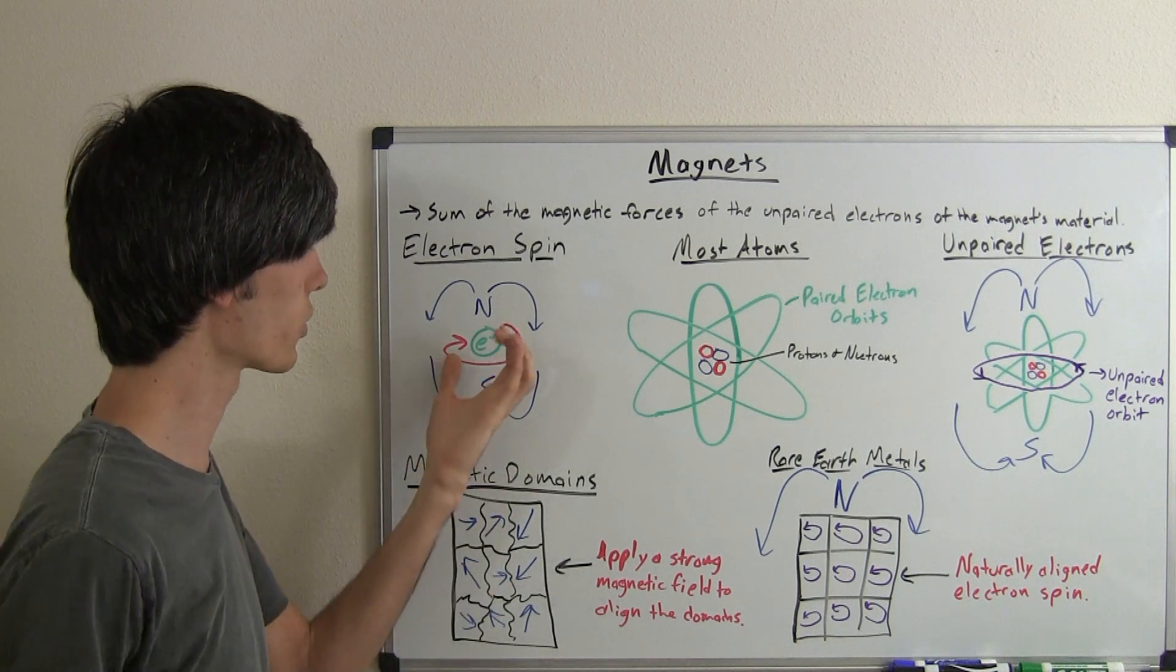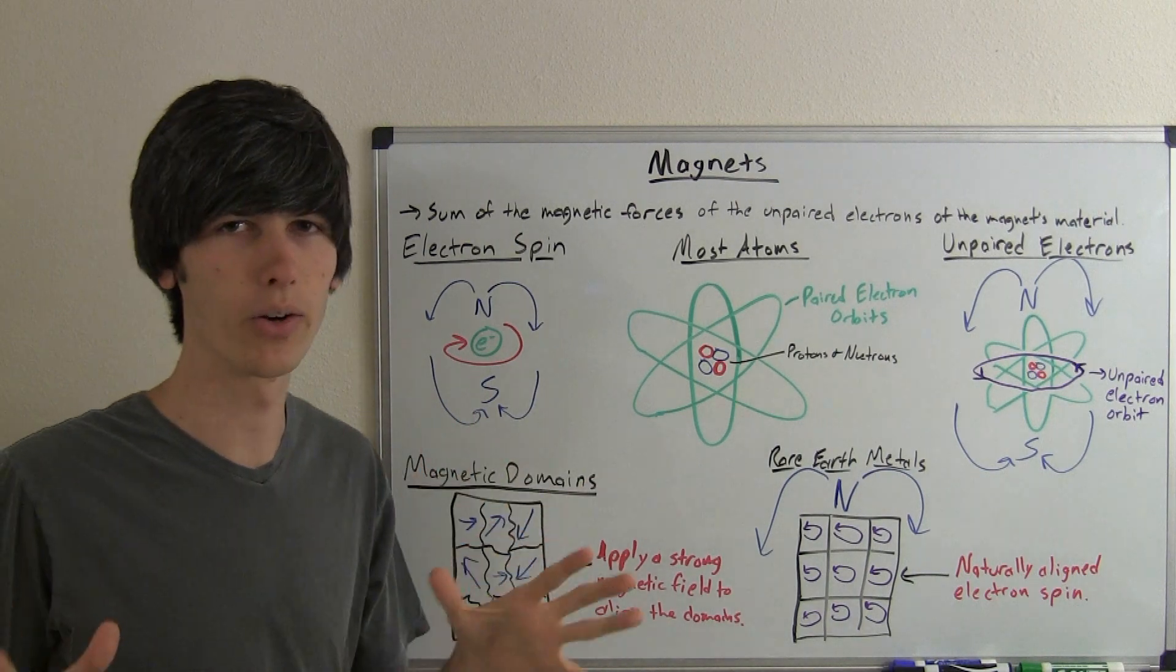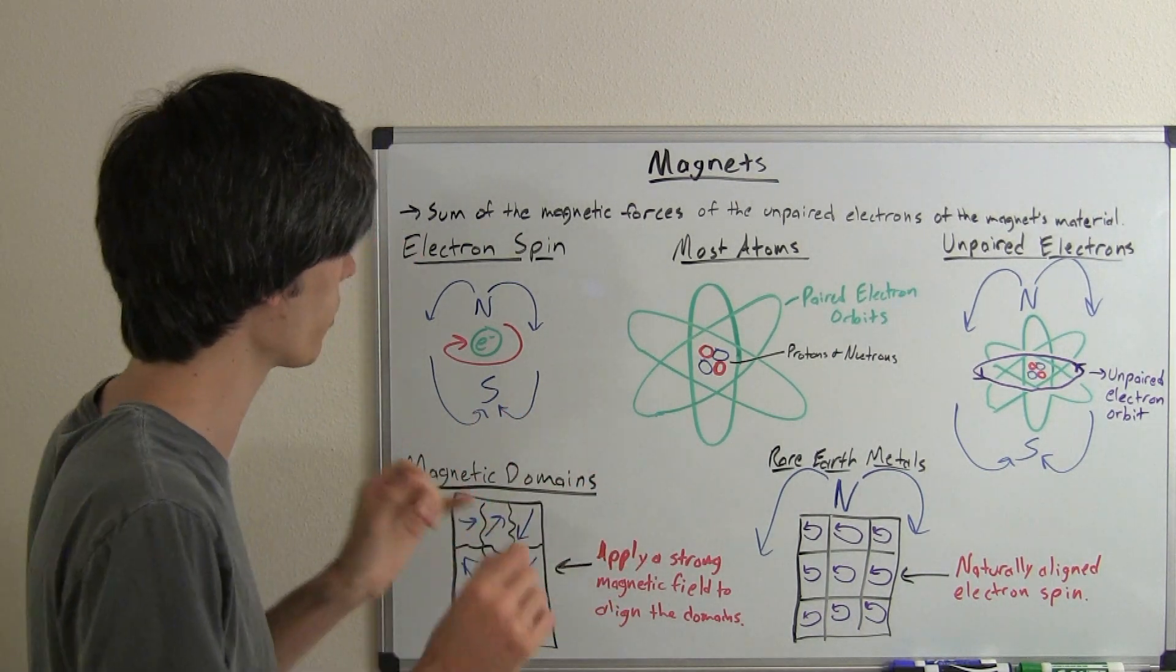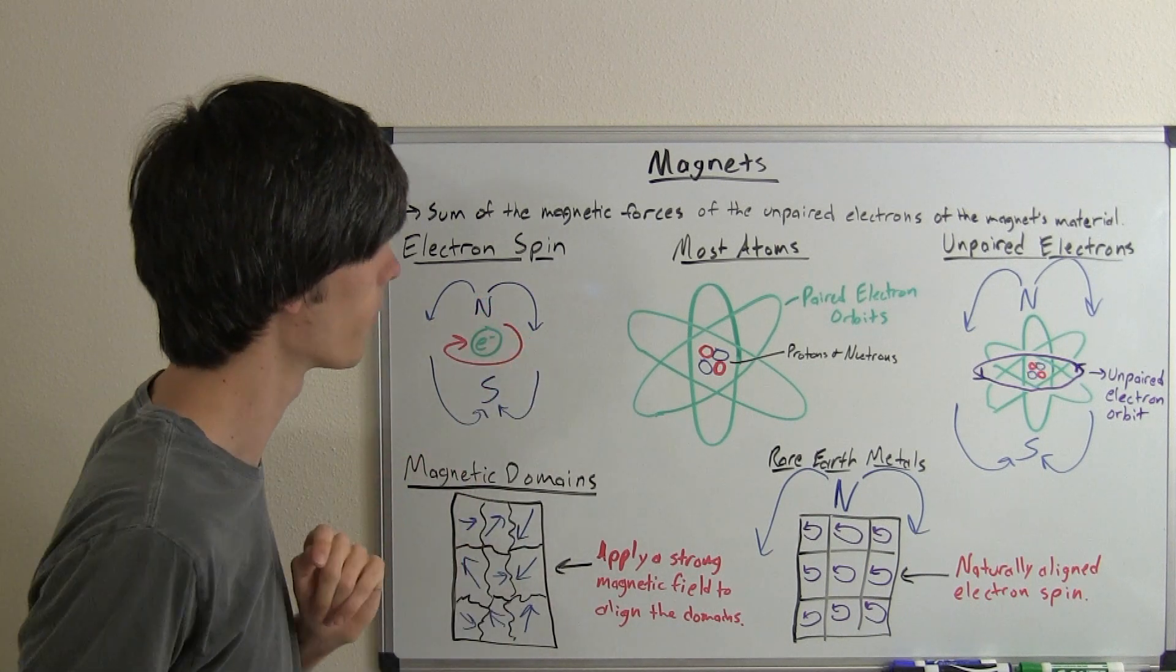Now if the electron were to have the opposite spin, rotate in the other direction - even though it's not actually what spin is - but if it were to have the opposite spin then the north pole would be down here and south would be down there.